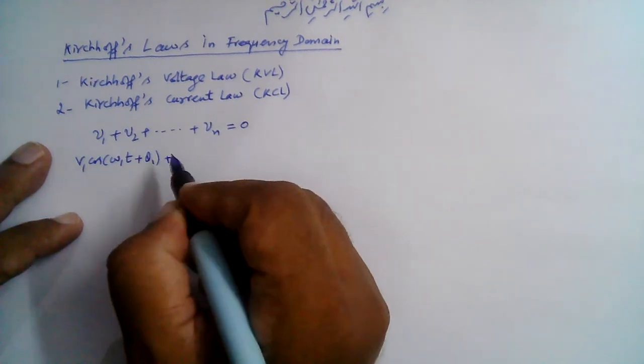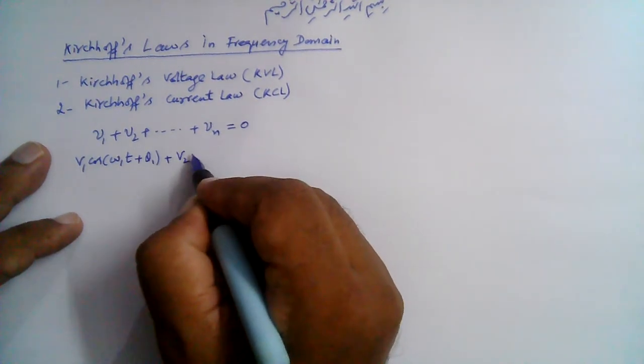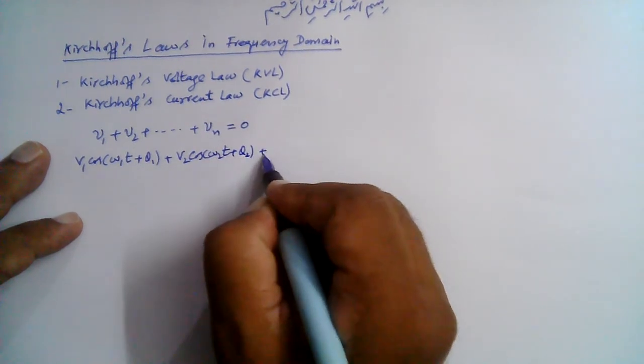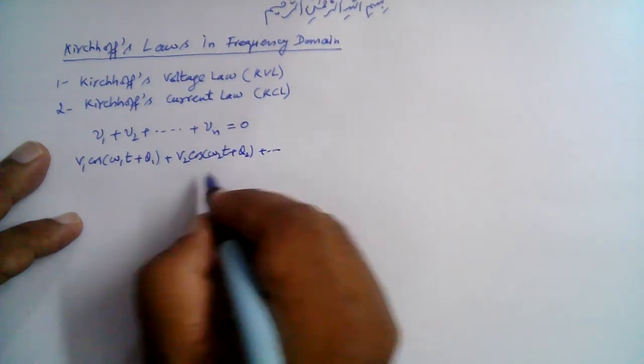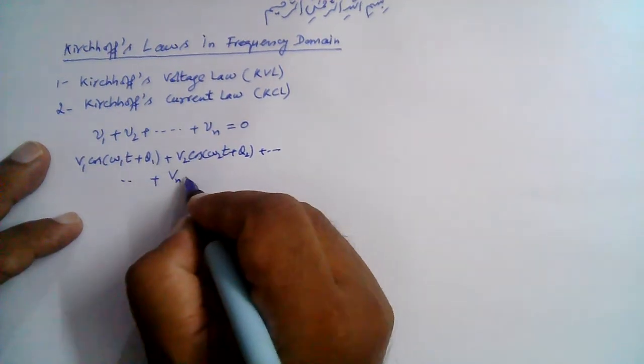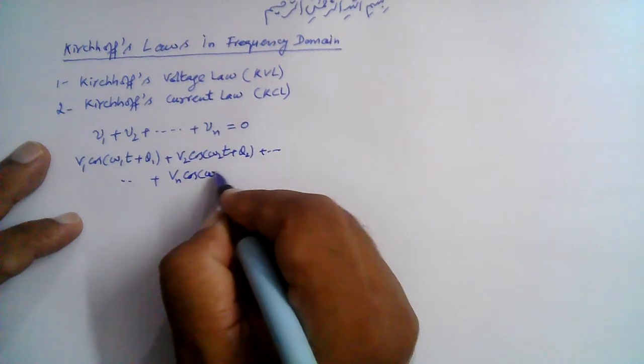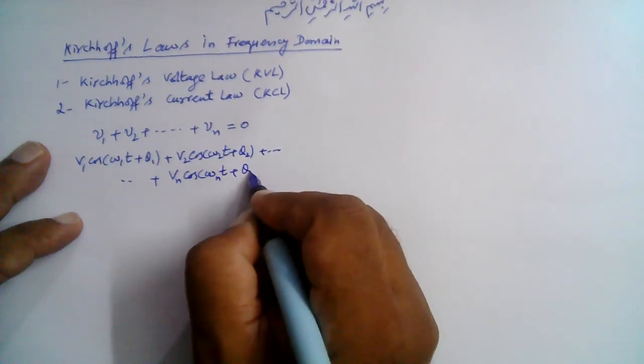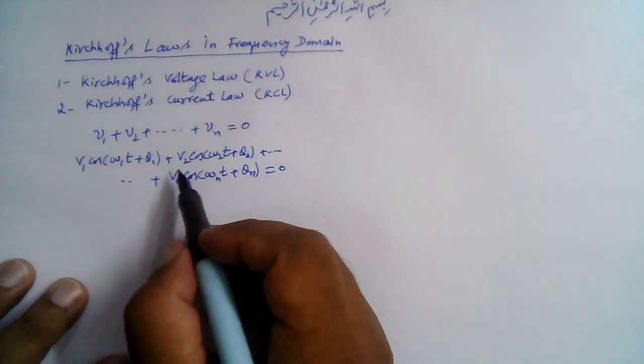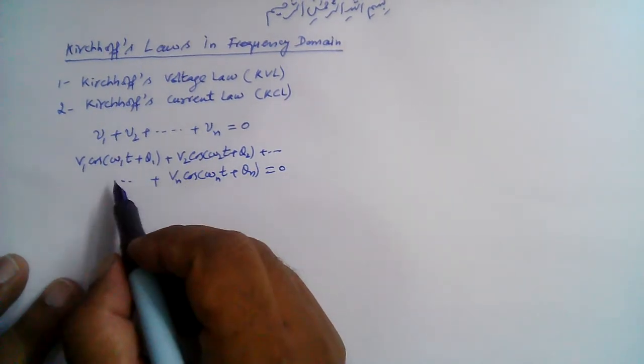V2 is V2 cos(ω₂t + θ₂), and so on till VN is VN cos(ωₙt + θₙ). Then their sum is zero. Their phasor representation in the phasor domain or the frequency domain...